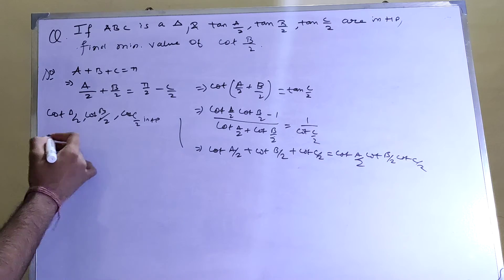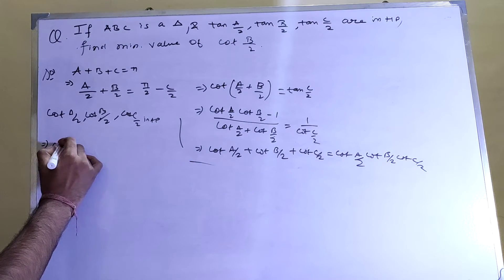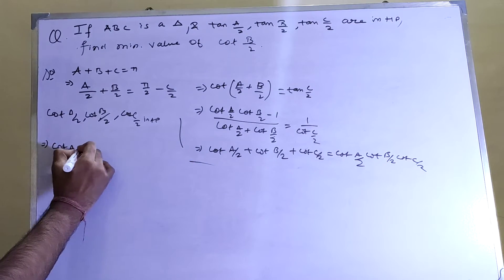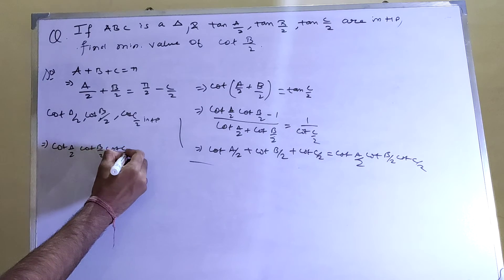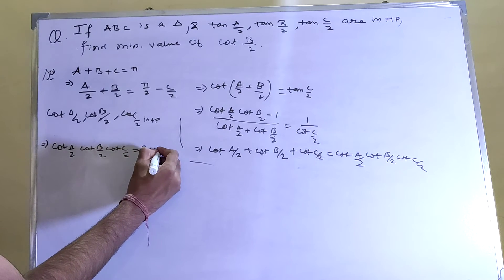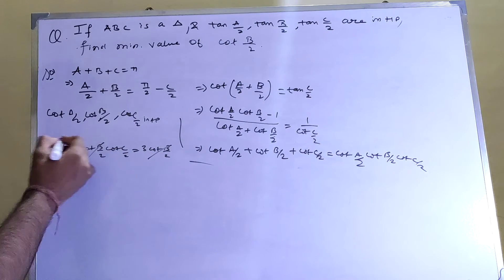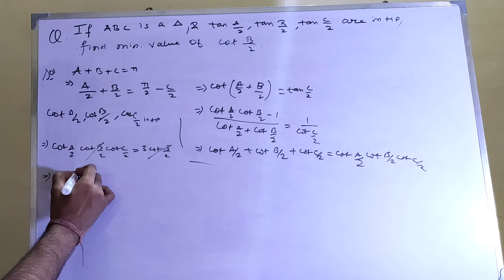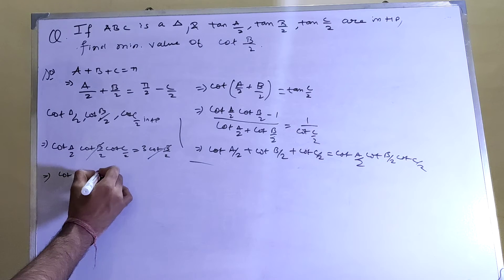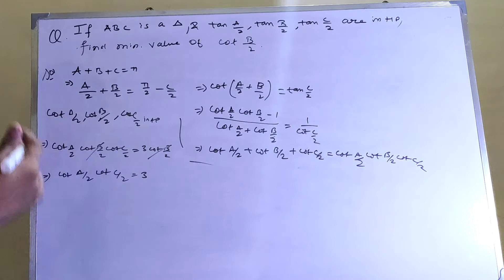Since cot(A/2), cot(B/2), cot(C/2) are in AP, we have cot(A/2) + cot(B/2) + cot(C/2) = 3·cot(B/2). Substituting back, we get cot(A/2)·cot(C/2) = 3.